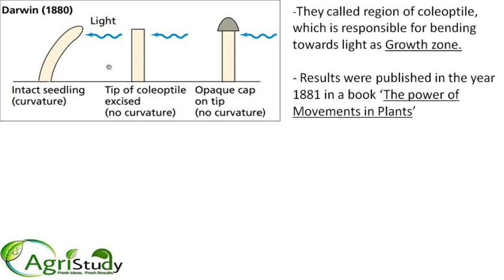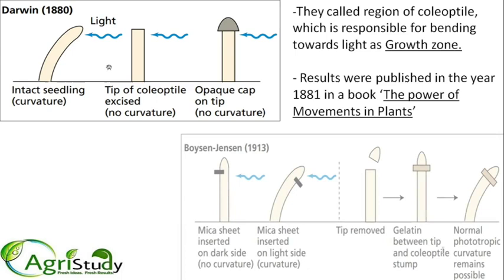This was the work done by Darwin. They called the coleoptile region the growth zone, which is responsible for the bending towards light. His results were published in a book, 'The Power of Movement in Plants,' in 1881.